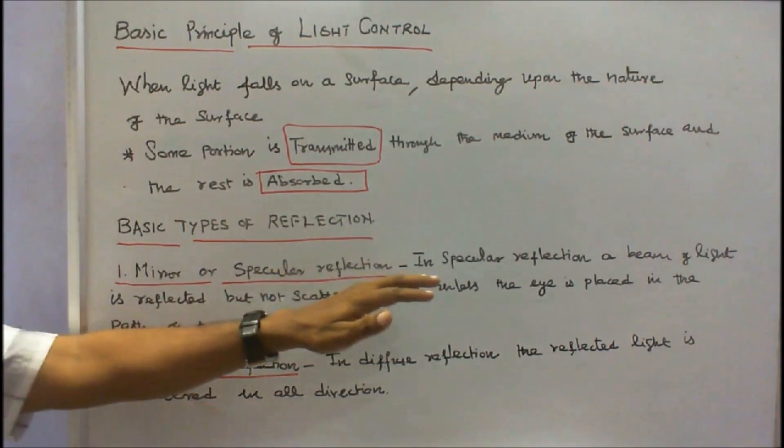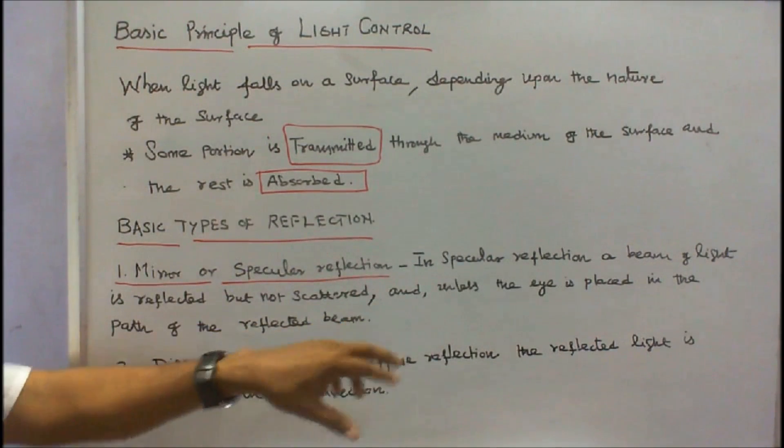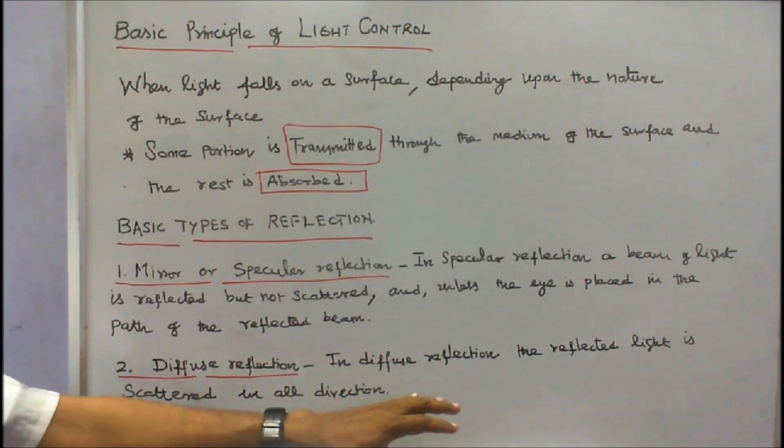In specular reflection, a beam of light is reflected but not scattered, and unless the eye is placed in the path of the reflected beam. In diffuse reflection, the reflected light is scattered in all directions.